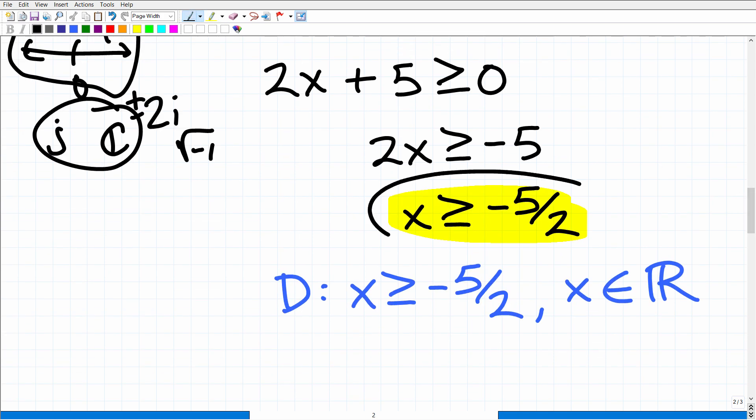As a matter of fact, if you wrote this, that's perfectly fine, but to be more precise about it, you would say the domain is all x is greater than or equal to negative 5 halves, where x is an element or part of the real number system.